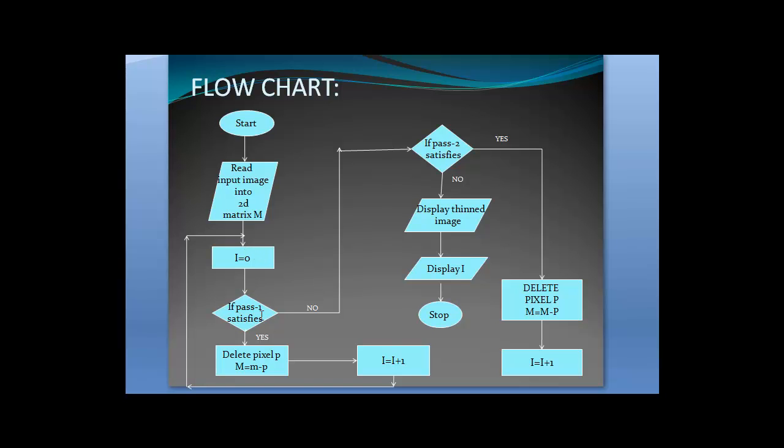If it does not satisfy the pass1 condition, it will move to the pass2 condition. If yes, it deletes the pixel and moves to the next pixel. If it does not satisfy the pass2 condition either, it displays the pixel. Hence, a thinned image is displayed and the program stops.